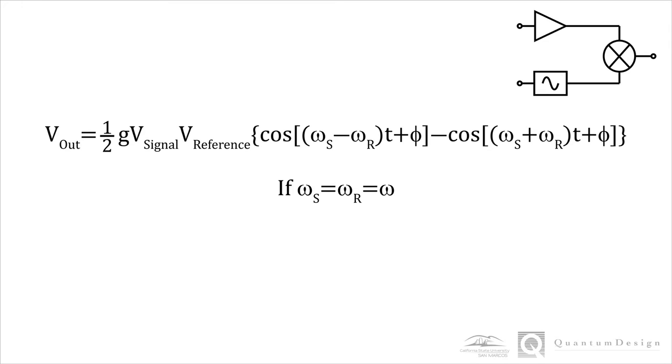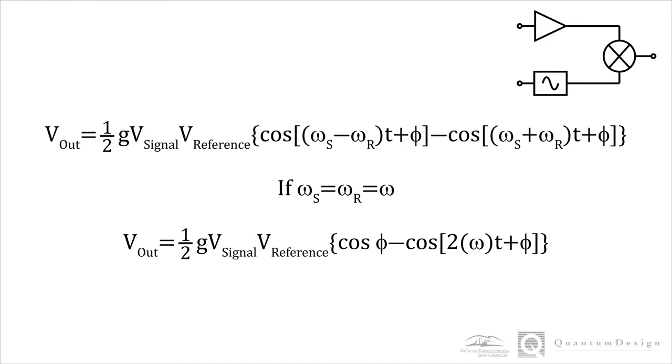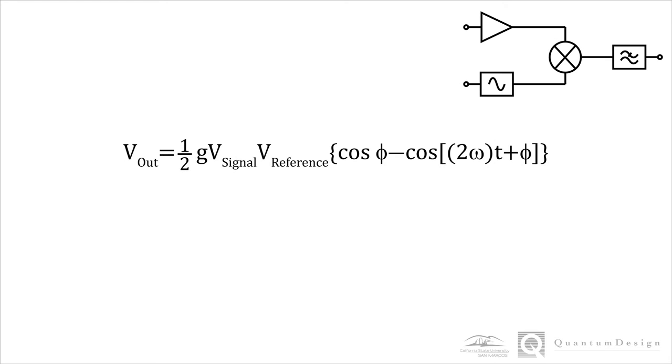Let's take this mixer output and consider the case where the signal frequency matches the reference frequency. We can therefore just call omega sub s and omega sub r the same omega. The output now has two terms, but notice that the first cosine term yields a constant value, and the second cosine term oscillates at two omega.